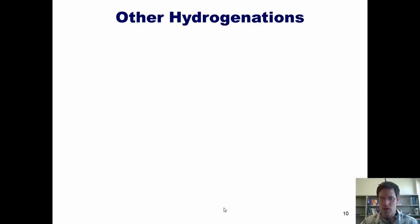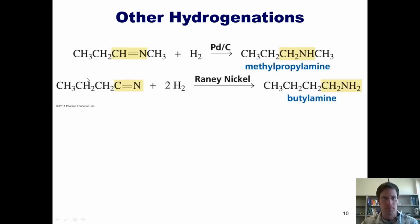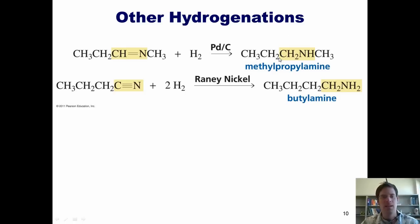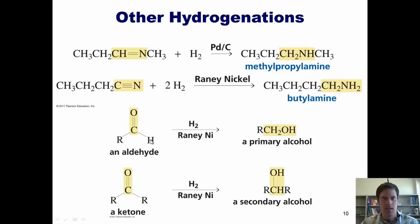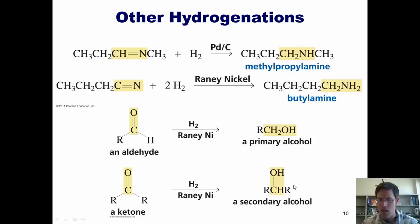Here are some other hydrogenation examples. I can take an imine—a carbon-nitrogen double bond—treat it with hydrogen and palladium, and reduce it to an amine. Similarly, I can take a nitrile—a carbon-nitrogen triple bond—treat it with hydrogen gas and Raney nickel, reducing it to an amine. I can take an aldehyde, treat it with H2 and Raney nickel, and reduce it to a primary alcohol. I can also take a ketone and reduce it under the same conditions to a secondary alcohol.